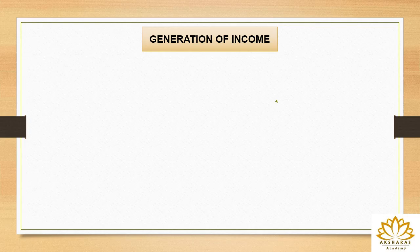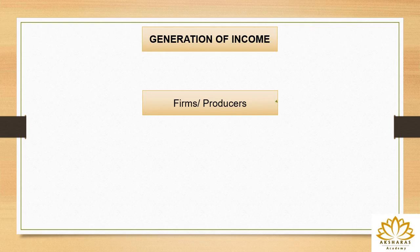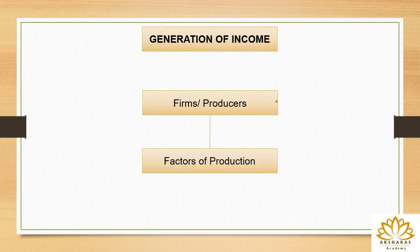Let's now understand the concept of income generation in an economy and how it takes place. There are firms or producers in an economy whose work is to carry out business in order to produce goods or services. They produce these goods or services with the help of factors of production. There are four factors of production which help firms or producers to produce their goods or services.